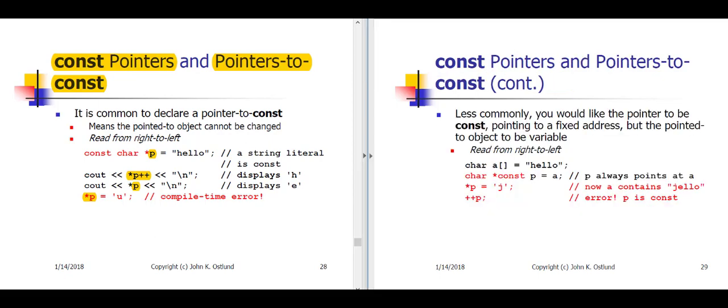A const pointer, on the other hand, is a pointer which itself is const. That is, the pointer points to some fixed location, and you cannot modify the pointer. Now, in this example here on slide 29, we're declaring P as, and recall our inside-out, right-then-left rule, we're declaring P as a const pointer to a char.